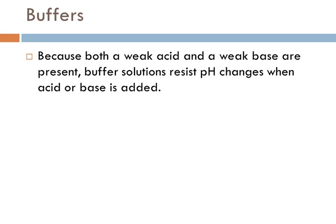So let's talk about why we care about buffers. A buffer is made from a weak acid and its conjugate base, or a weak base and its conjugate acid — both an acid and a base are present as conjugate pairs. Because of this, buffer solutions resist pH changes. That's the hallmark of a buffer. If you add an outside source of an acid or a base to the buffer solution, the pH will not change much — only a little bit. There's a buffer system in your blood whose job it is to keep your blood pH at 7.4. If your blood pH gets too high or too low, there are serious health consequences.